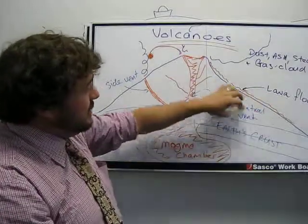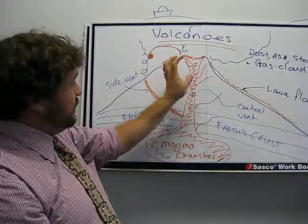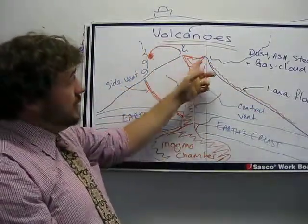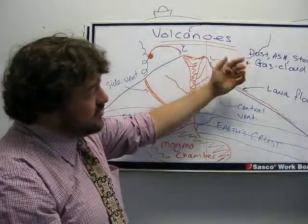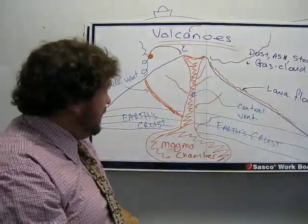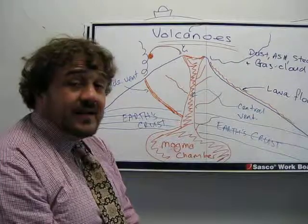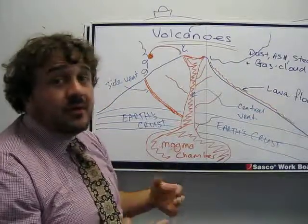So this is our main central vent, a side vent of smoke, and this giant cloud is dust, ash, steam, and the gas cloud. And that is the anatomy of a volcano — nice and simple.